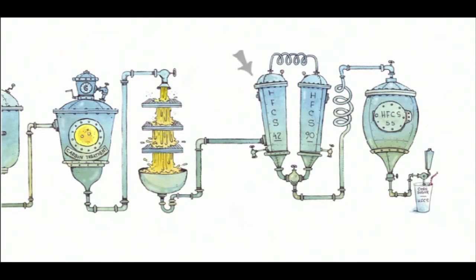Some of the HFCS 42 then goes through a liquid filtration process to increase the fructose content, creating a liquid that is 90% fructose. This product is called HFCS 90.